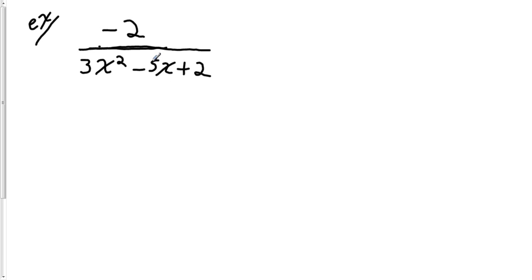The first thing you want to do is make sure that this rational expression represents a proper rational expression. The polynomial on top — in this case the constant negative 2 of degree 0 — must have a smaller degree than the polynomial in the denominator. The denominator's degree is 2, so this is a proper fraction. If it were not a proper fraction, we'd have to proceed with long division, which would produce a polynomial plus a proper rational expression.